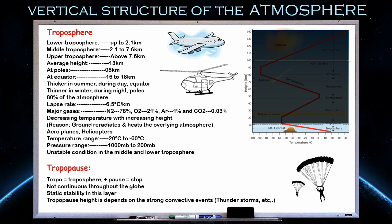Aeroplanes, helicopters, and parachutes are mostly seen operating in the troposphere. The temperature range of the troposphere is from +20 degrees Celsius to -60 degrees Celsius, and the pressure range is from 1000 mb at the surface to 200 mb at the top.